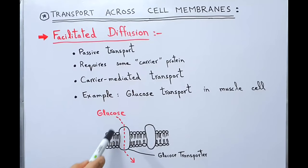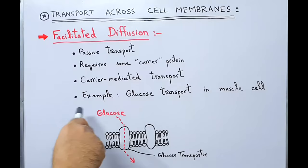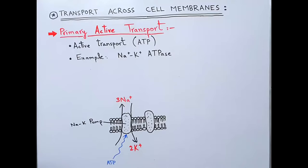An example of facilitated diffusion is glucose transport in the muscle cell. Glucose is transported into the muscle cell by a glucose transporter. So in facilitated diffusion, diffusion occurs through some carrier protein.